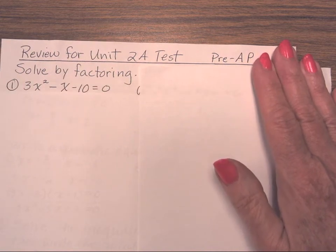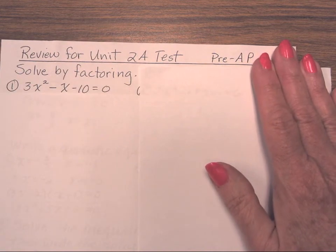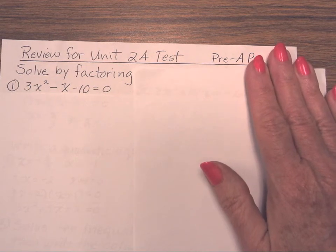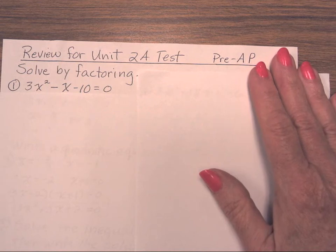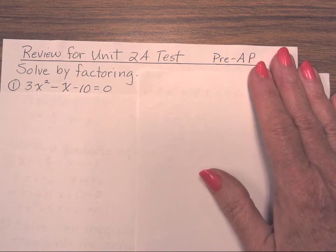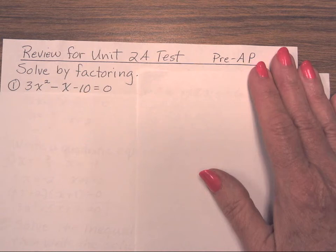The first problem is 3x squared minus x minus 10 equals 0. You need to always be sure that everything is on one side of the equation, set equal to 0 before you factor. This one is ready to go.